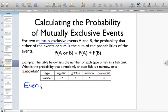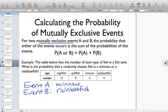What's the probability that a randomly chosen fish is a minnow or a rainbow fish? Event A would be the probability of choosing a minnow, and event B is the probability of choosing a rainbow fish. We want to ask ourselves, is it possible to pick out a fish that is both a minnow and a rainbow fish? Since it's not, we know that these are mutually exclusive.